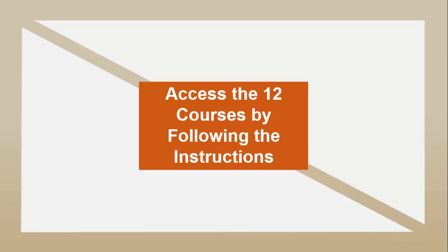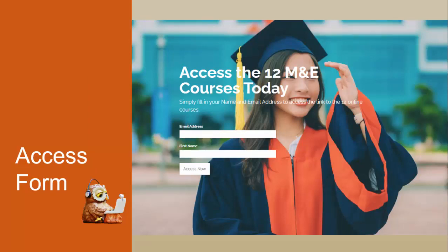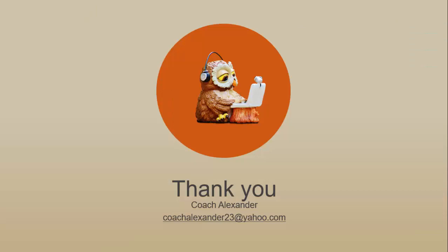Now let's get to how you access these 12 courses. The instructions are pretty simple — the form is in the description below. When you click the link, you get to the page. Simply enter your email address and first name and press the access button. You'll be given a document with more information about the courses so you know what you're signing up for, and then you can access them through another link in that document. M&E Made Simple continues giving you a lot of good free content, so please continue writing to me and following this channel. Thank you so much — I've been your host, Coach Alexander. See you on the other side. Bye.